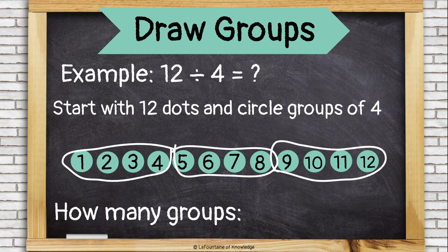And then to find the answer, just figure out how many groups you circled. I was able to circle three groups of four dots and twelve divided by four is three.